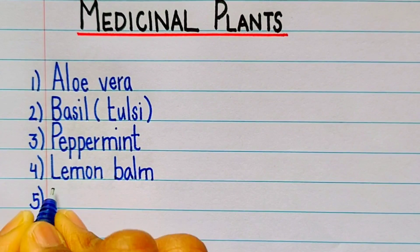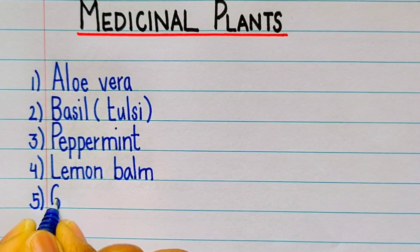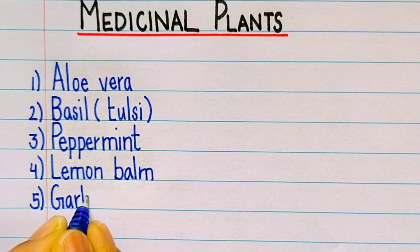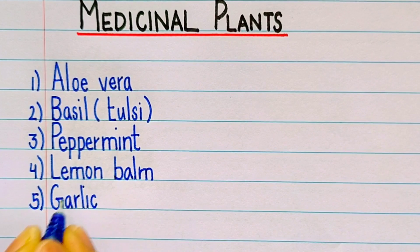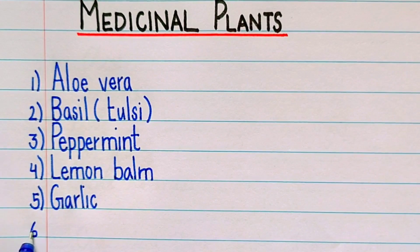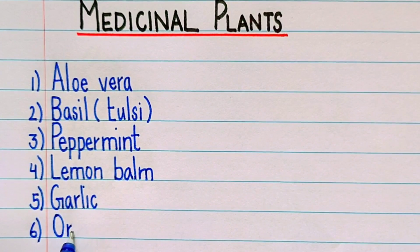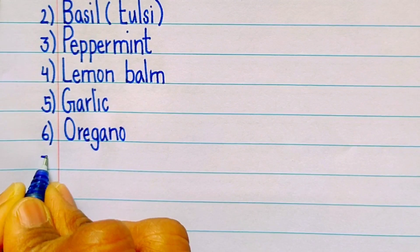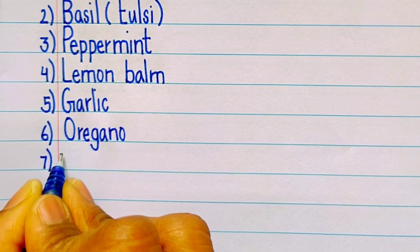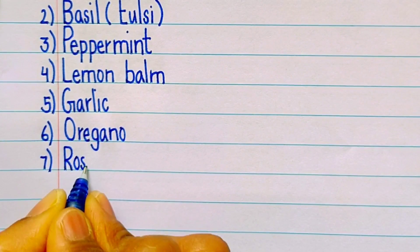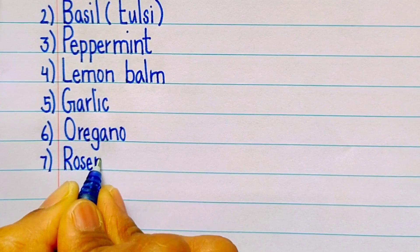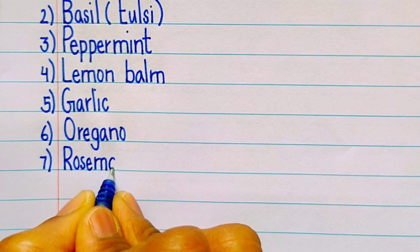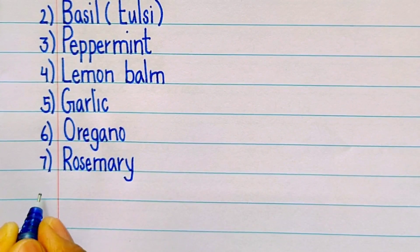Fifth one is garlic, G-A-R-L-I-C. Sixth one is oregano, O-R-E-G-A-N-O. Seventh one is rosemary, R-O-S-E-M-A-R-Y.